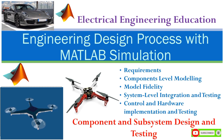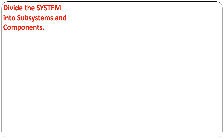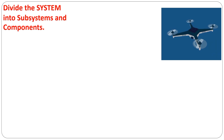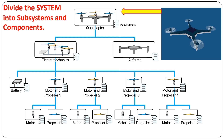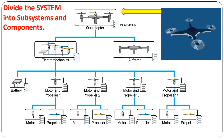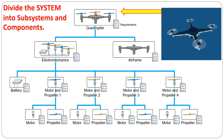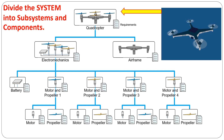So far, we've divided the quadcopter into subsystems and components. We'll design the components, subsystems, and system to meet requirements and then demonstrate that the quadcopter will fly. How should we start our design process? We could begin by purchasing off-the-shelf parts, building a hardware prototype, and testing to see if it works. This might work for simple systems but doesn't scale well for complex systems — it could become expensive and time-consuming to iterate through different hardware prototypes. Instead, we'll learn how to use modeling and simulation as the foundation of the design process.